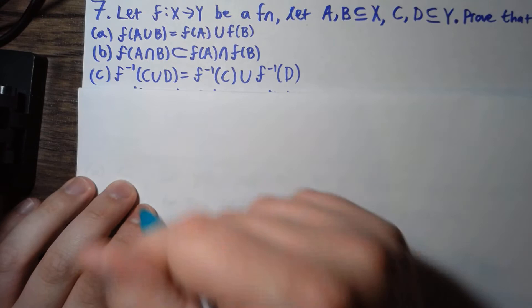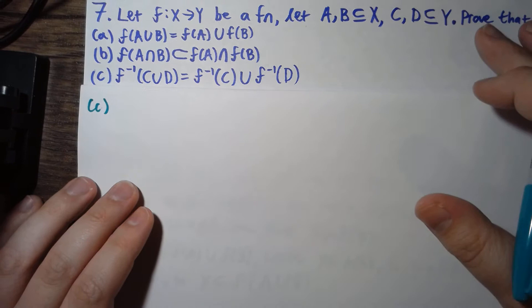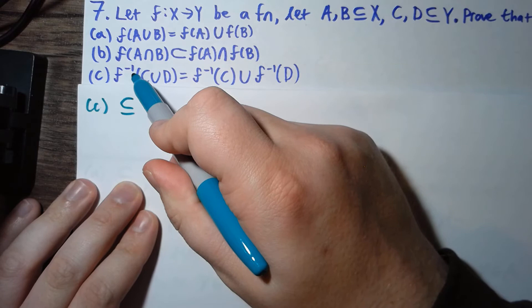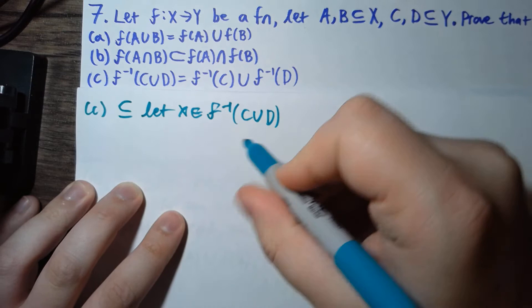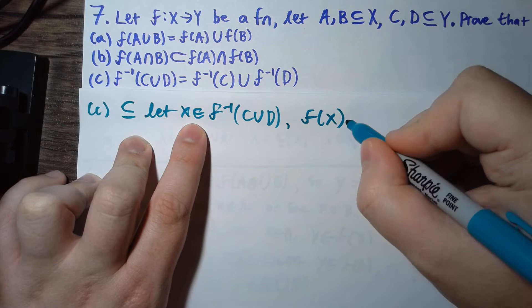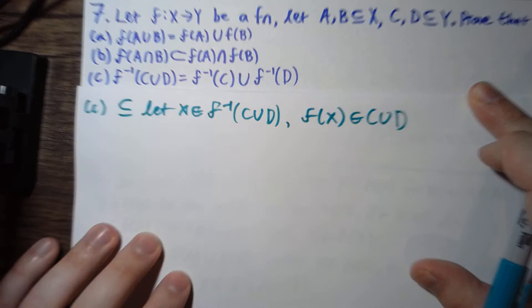For part c, we want to do another equality, so again we have two subsets. We're talking about the inverse image of C union D. Say we have x in the pre-image of C union D. That means that f of x is an element of C union D.